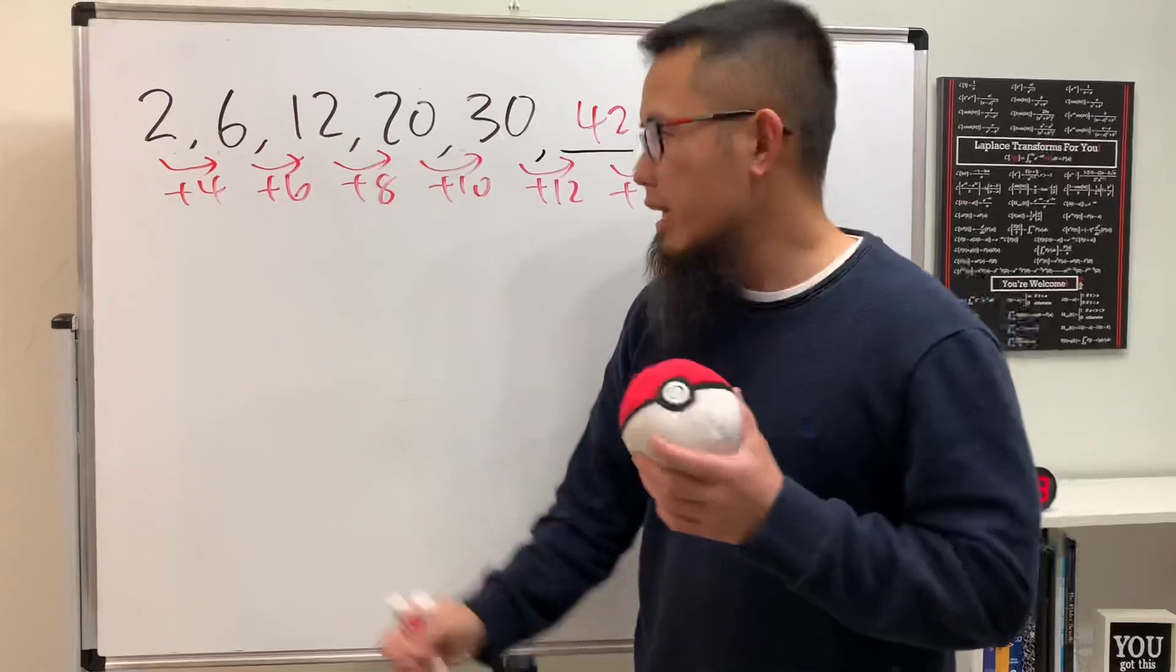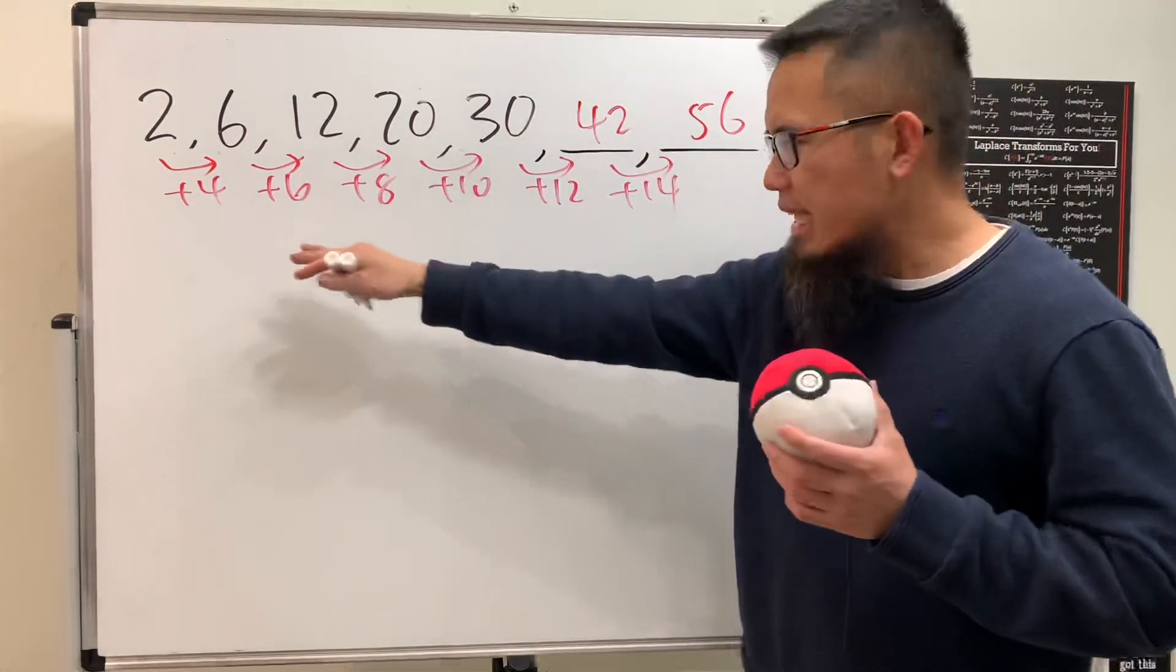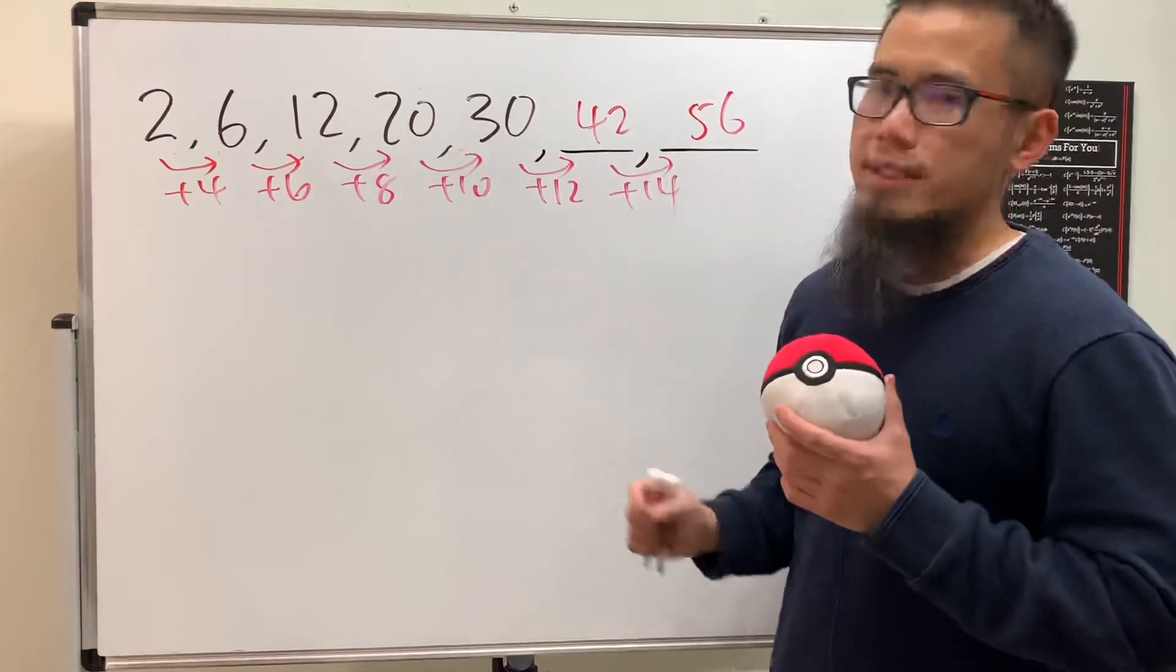Very nice, right? Look at that. This actually is just every time plus 2. So the second level difference is always plus 2, so that means we have a quadratic sequence.